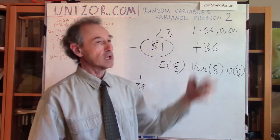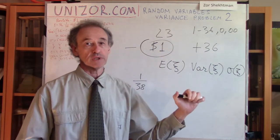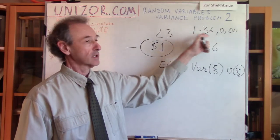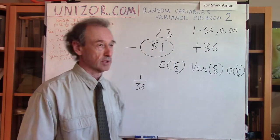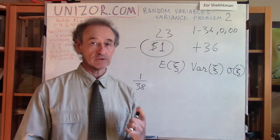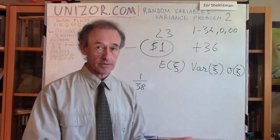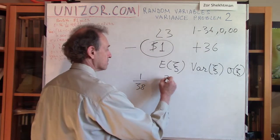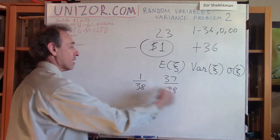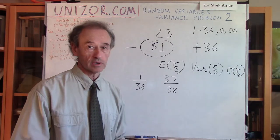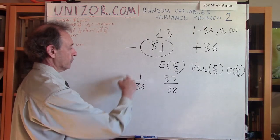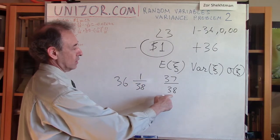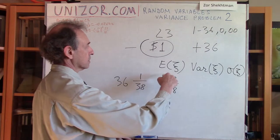Out of these 38 outcomes, there is only one winning outcome — when the ball stops on number 23, because that's what we bet on. All other elementary events — 37 of them — are losing. So the probability of winning is 1/38, and the probability of losing is 37/38. When we win, we earn $36; with all losing outcomes, we lose $1.